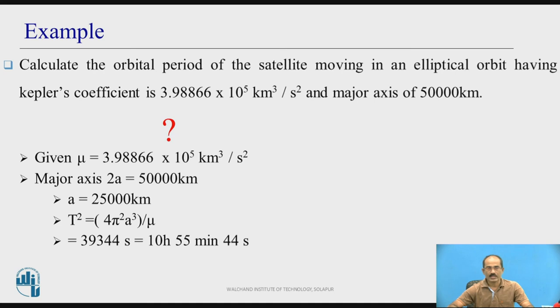Now, if I calculate semi-major axis, major axis is 2A, semi-major axis is A. So if I take two to the other side, it becomes A = 25,000 kilometers. Now we have the formula T² = (4π²A³)/μ.